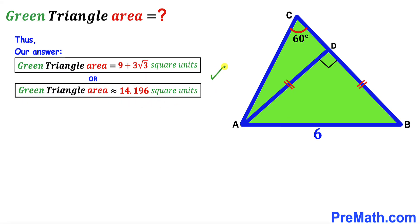The area of the green shaded triangle ABC is 9 + 3√3 square units, approximately 14.196 square units. Thanks for watching and please don't forget to subscribe to my channel for more exciting videos.